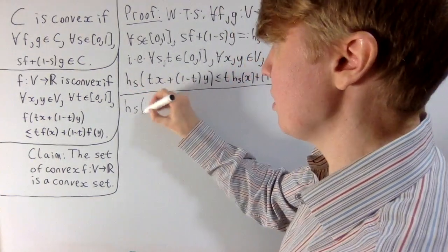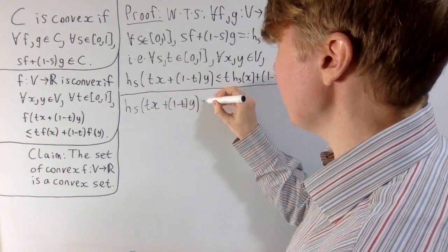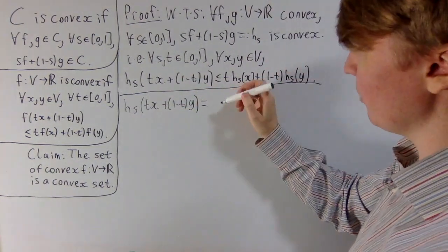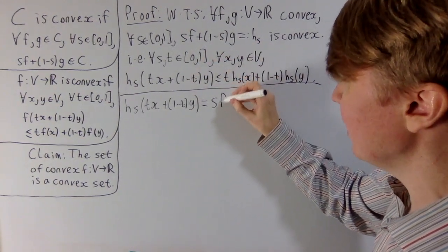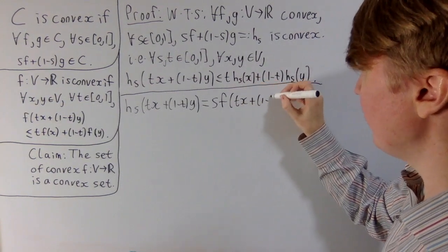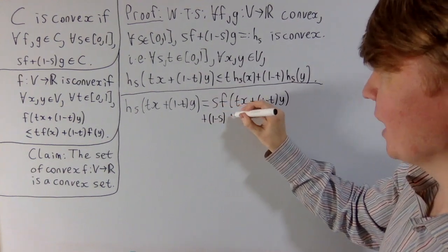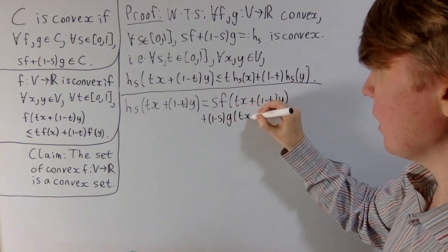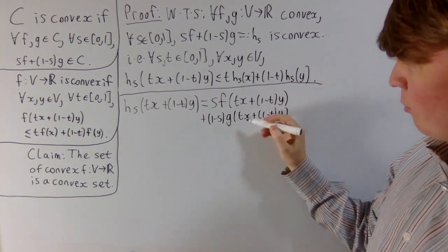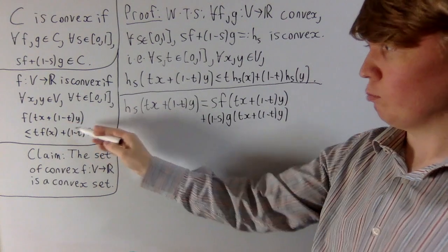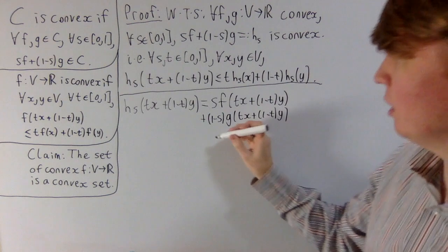We expand h_s(t·x + (1−t)·y) in full. Since h_s = s·f + (1−s)·g, we get: s·f(t·x + (1−t)·y) + (1−s)·g(t·x + (1−t)·y). Now, because f and g are both convex, we can apply the convexity inequality to each term and take the t and (1−t) factors outside the functions.